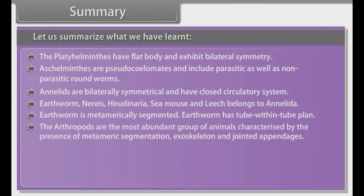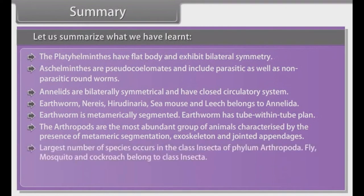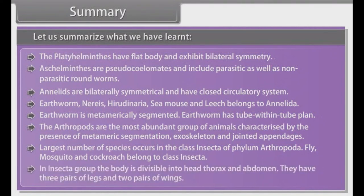The arthropods are the most abundant group of animals, characterized by metameric segmentation, exoskeleton and jointed appendages. The largest number of species occurs in class Insecta of Phylum Arthropoda. Fly, mosquito and cockroach belong to class Insecta. In the Insecta group, the body is divisible into head, thorax and abdomen. They have three pairs of legs and two pairs of wings.